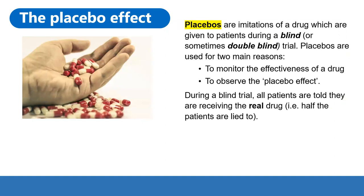We're first going to talk about the placebo effect, which many of you will have heard about already. Placebos are essentially imitations of a drug, which are given to patients during a blind or sometimes double-blind trial. Placebos are used for two main reasons: first, to monitor the effectiveness of a drug — how well its intended result is coming about — and second, to observe the placebo effect, the patient getting better when there isn't actually any medication supporting them. During a blind trial, all patients are told they are receiving the real drug, which means half the patients are lied to.